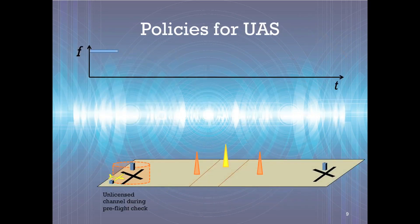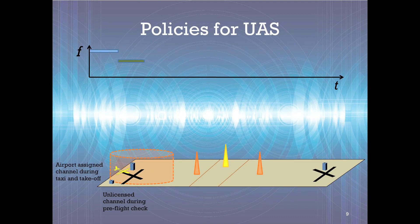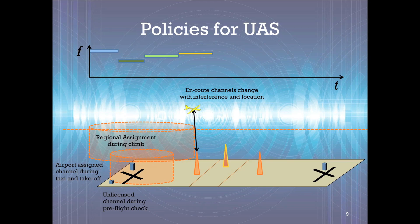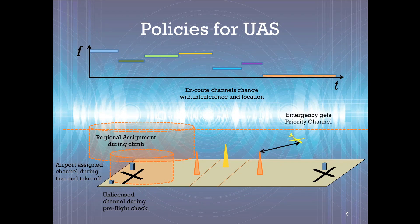Unmanned aircraft systems need spectrum policies that consider the specifics of their operations. The policies that can be used vary with the phase of flight and must be able to encode three-dimensional volumes such as for the airspace classes. As shown in the top graph, the spectrum used changes as the aircraft goes from pre-flight to taxi to takeoff and en route. While en route, spectrum changes with location and avoids unexpected interference. During a mechanical failure, the aircraft invokes an emergency policy to maintain control until the aircraft lands.